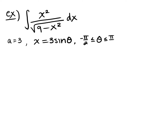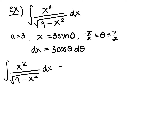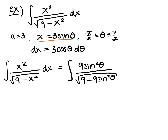The integral is ∫x²/√(9 - x²) dx. Replacing x with 3·sinθ: x² becomes 9·sin²θ. The denominator 9 minus x² becomes 9 minus 9·sin²θ. And dx becomes 3·cosθ·dθ.